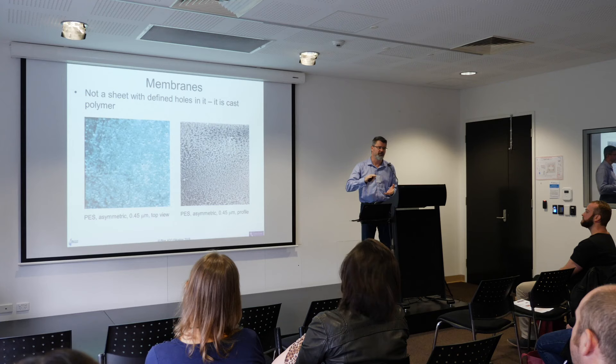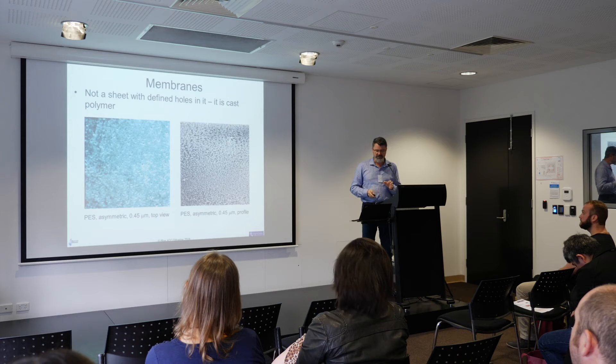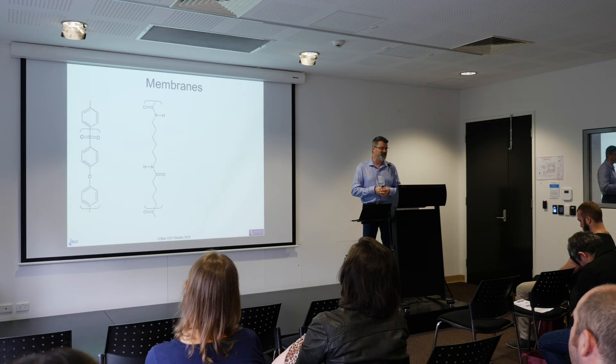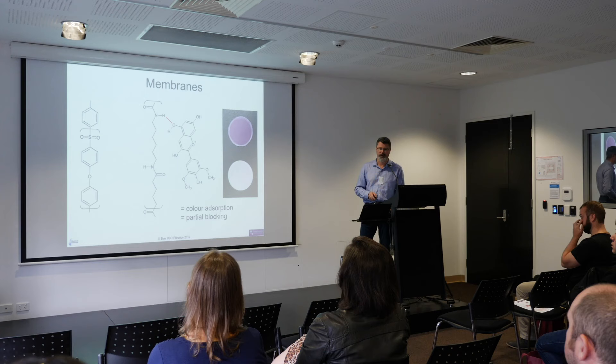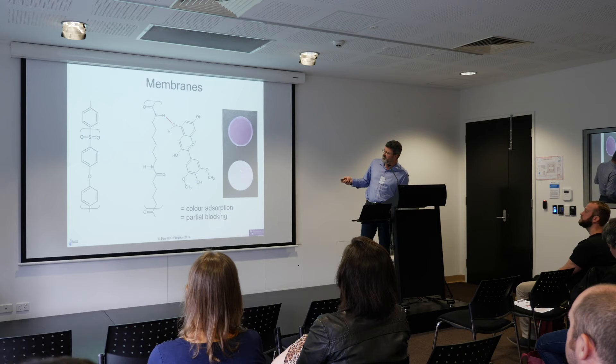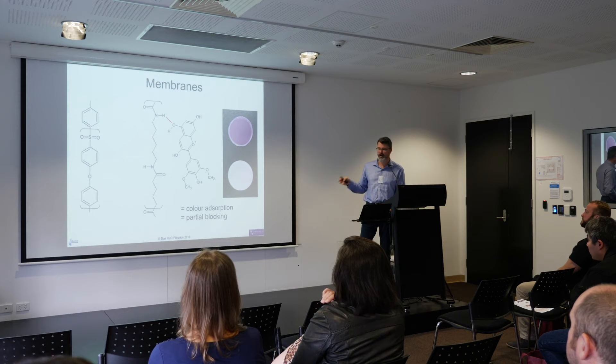A PES membrane is typically asymmetric, meaning the density varies throughout — the entry and exit are fairly coarse, and there's a tight region in the middle that provides your micron retention. Bear in mind there is no standard in Australia, New Zealand, or pretty much anywhere for what constitutes a 0.45 micron wine membrane — that should raise a few eyebrows. Nylon is good at hydrogen bonding, which means it strips colour from young reds. These two membrane discs — PES and nylon — both had young red run through them, and you can see clearly why nylon doesn't feature much in filtration trains these days.